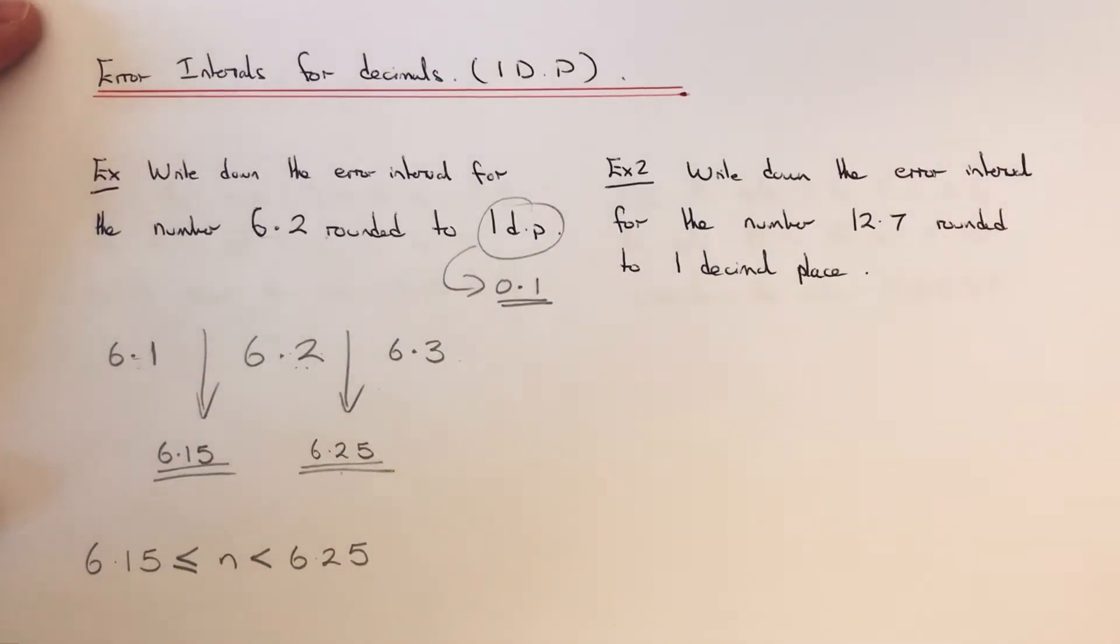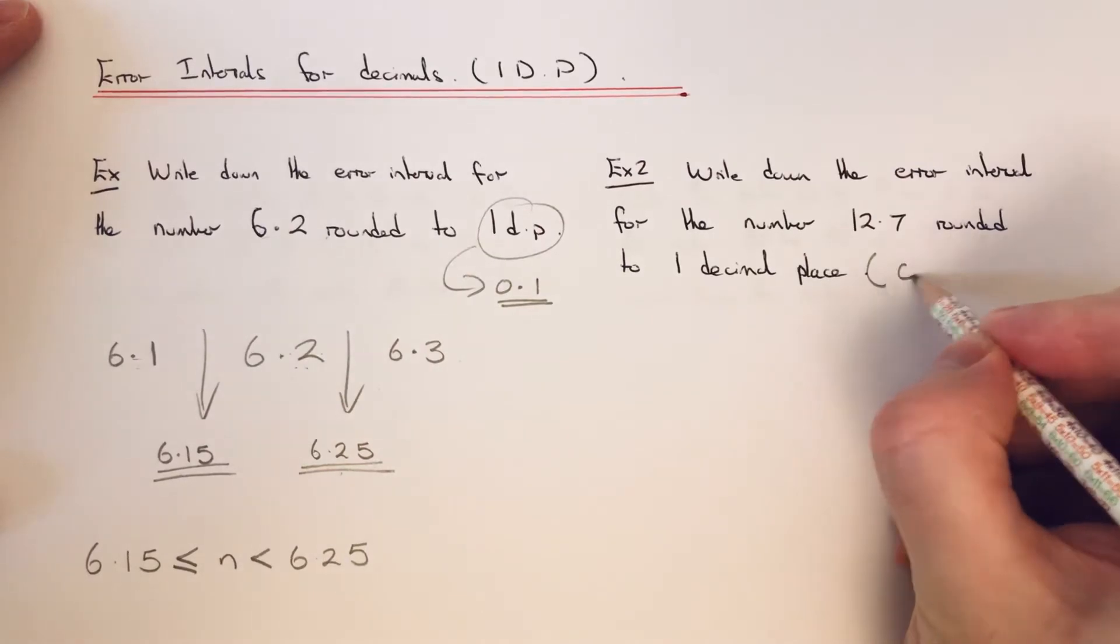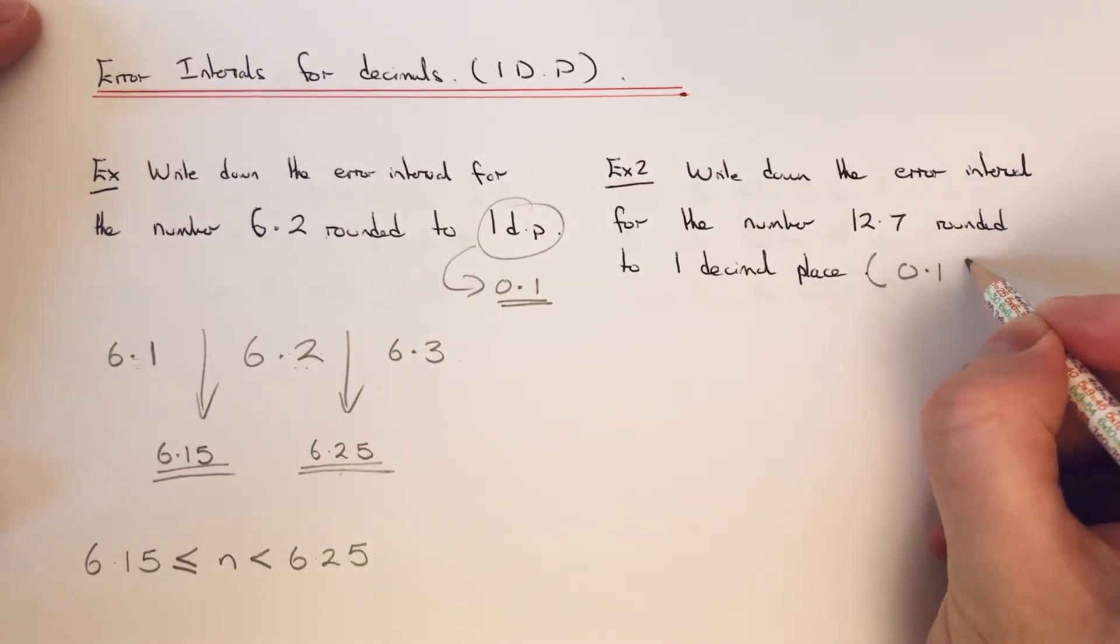So I've got to write down the error interval for the number 12.7 rounded to one decimal place. So again since it's been rounded off to one decimal place this means our scale is going up in 0.1s again.